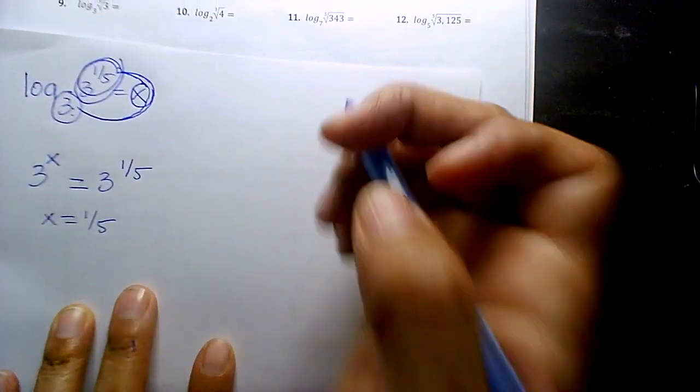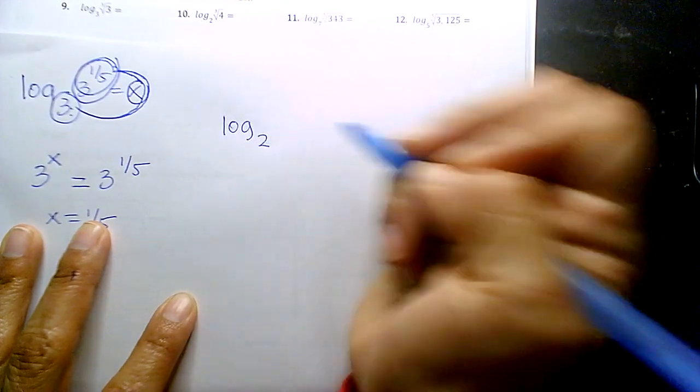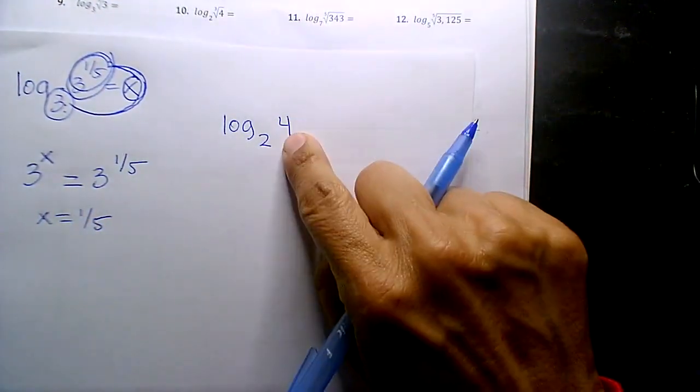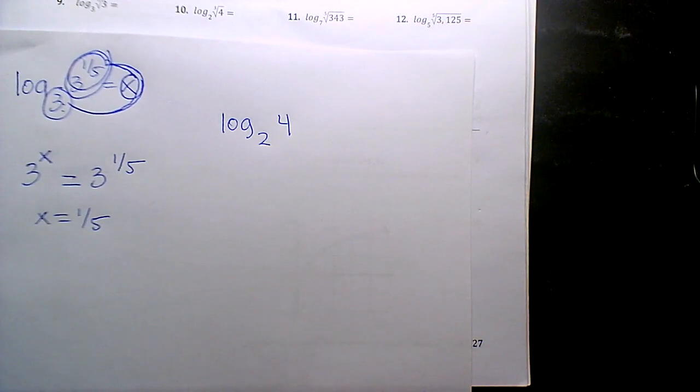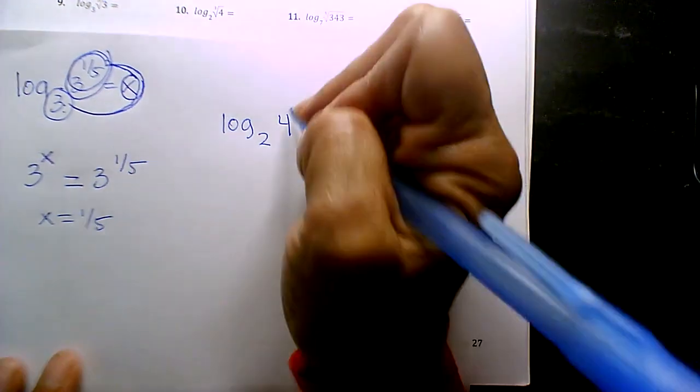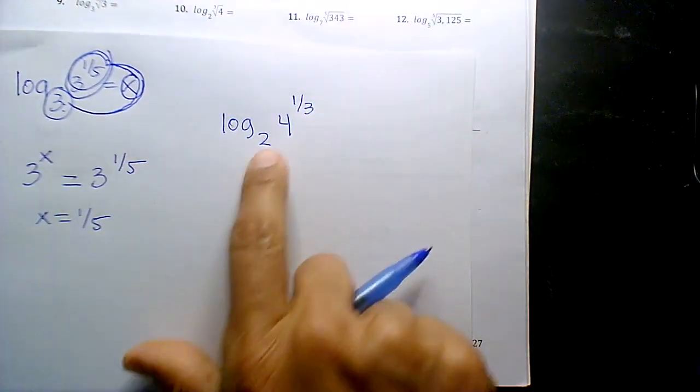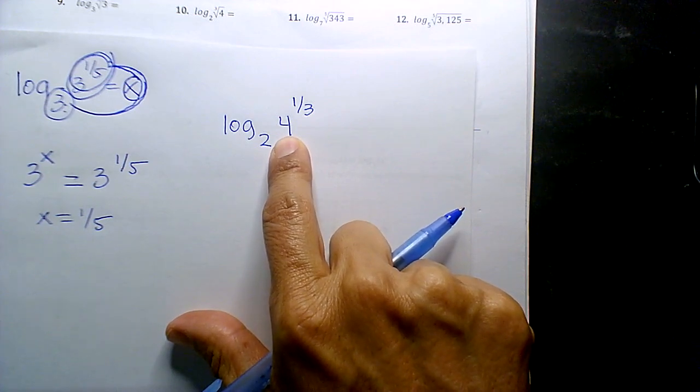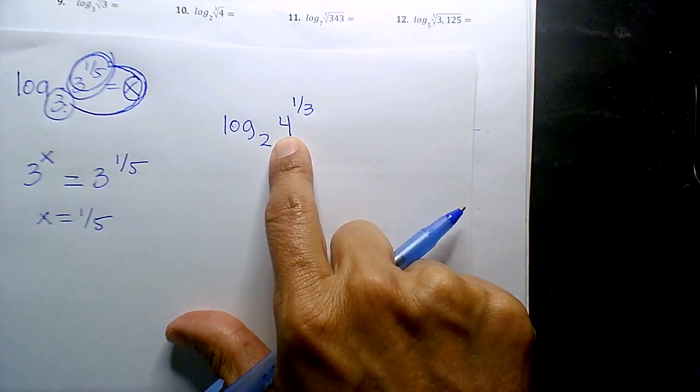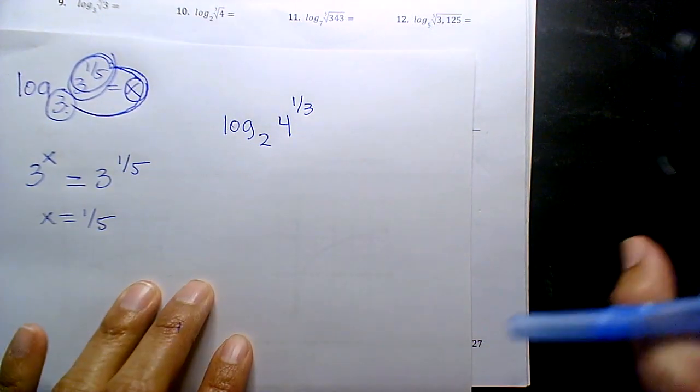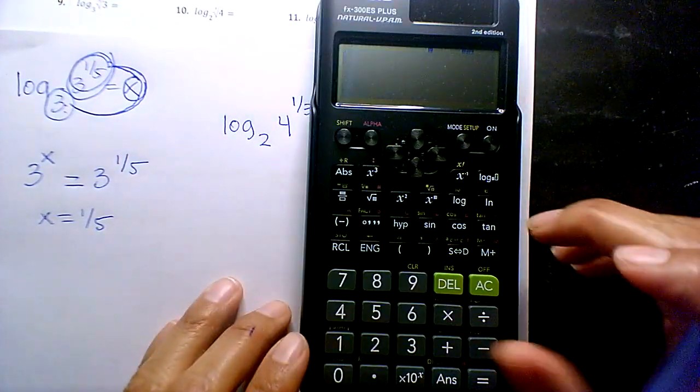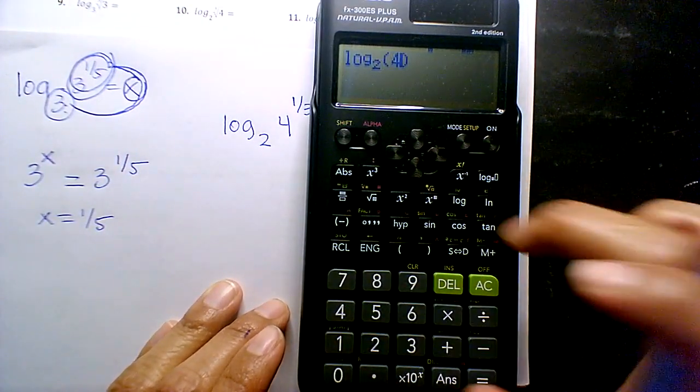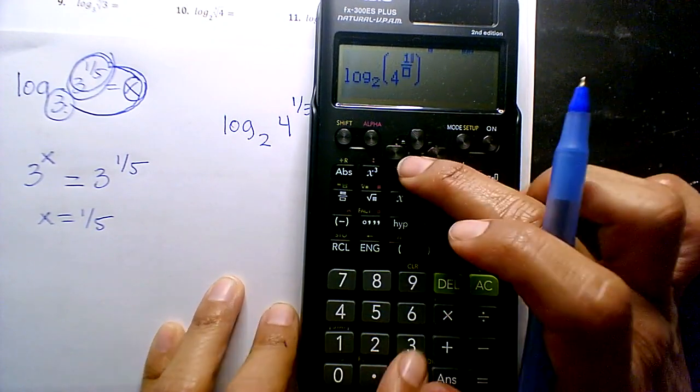Okay, if you're doing ten, log base 2, right? The base is 4, what's my exponent? One-third. But you see your base is 2, and I have a 4. You could express it as a 2-base, but if you wanted to go straight to your calculator, you can. Look at that, so easy. And you get two-thirds.